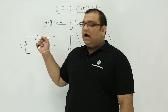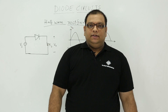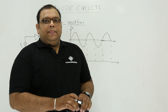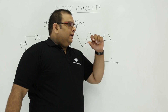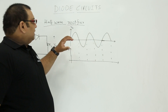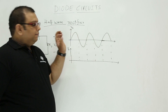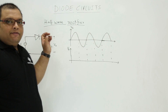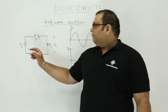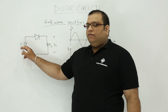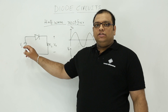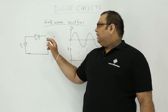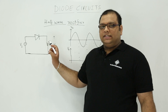Now let us discuss about the half wave rectifier. In the half wave rectifier, it is the application of a diode. When you see the circuit of half wave rectifier, the circuit will have a voltage source, a diode, and a load resistance.